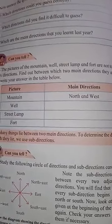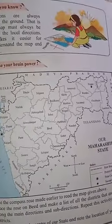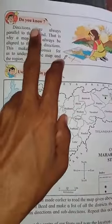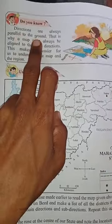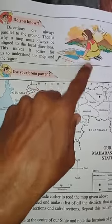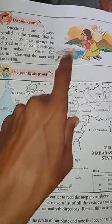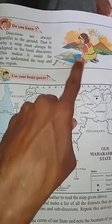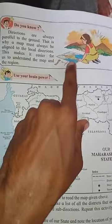Now we are going to see the scale of the map. While drawing the map you have to remember three things - it is on page number 83. Directions are always parallel to the ground - this side, that side, all directions will be opposites. That is why a map must always be aligned to the local direction, which makes it easier to understand the map of the region.